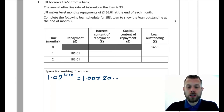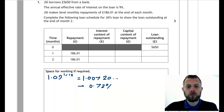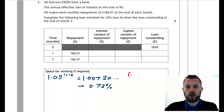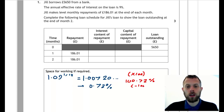Now we need to change this into a percentage. So this would be 0.72%. If there's any confusion where that comes from, remember you multiply by 100, and you would get 100.72%. And then you would take away 100, and that would give you the 0.72.